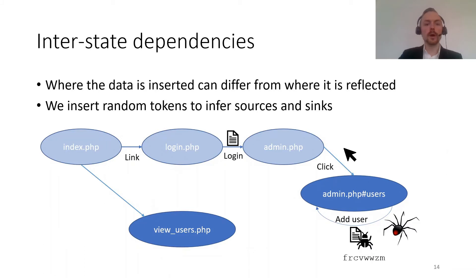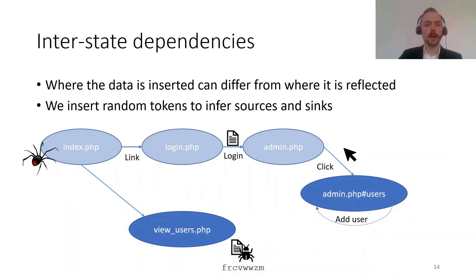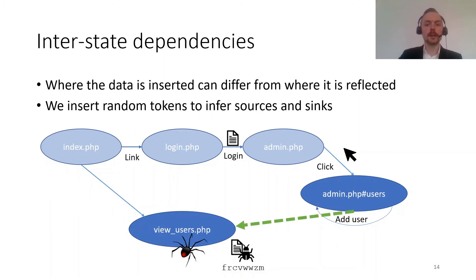For interstate dependencies, where data is inserted can differ from where it's reflected. To detect these sources and sinks, we insert random tokens. For example, when adding a user, the username might be a random string like FRCVW. This is injected into the application and might be reflected on another page. We continue to crawl, and for every page, we look for all tokens we have inserted. When we find one, we infer the relationship between the admin page and the view user page. This is critical during fuzzing — if we don't check the sink for every payload injected at the source, we might only see the final payload when we continue crawling. So for everything we inject in the source, we also check the sink.